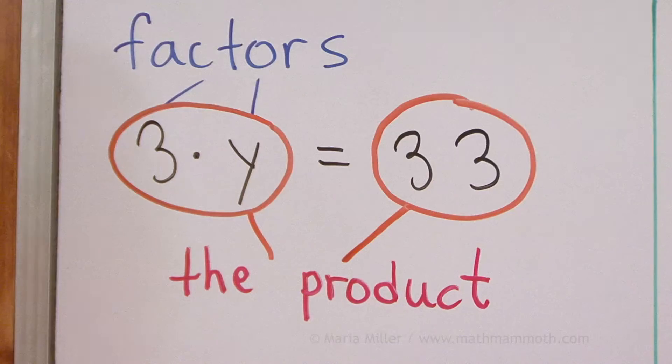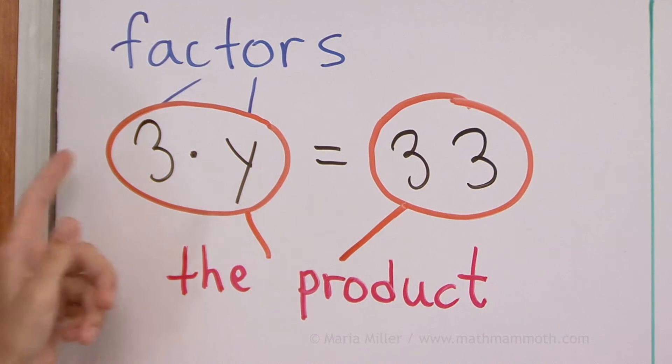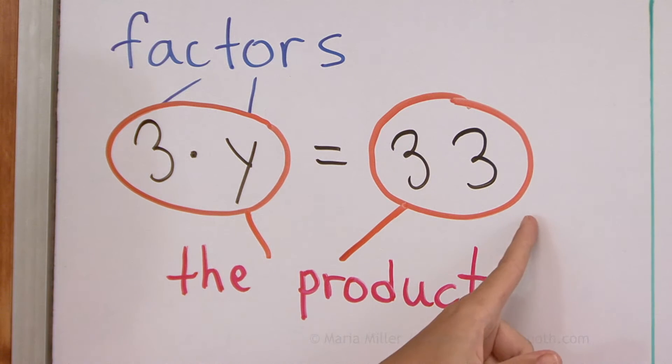Here in multiplication, the numbers we multiply are called factors. I could have more of them too. I could have 3, 4, 5, however many numbers there to be multiplied. And then the answer is called the product.